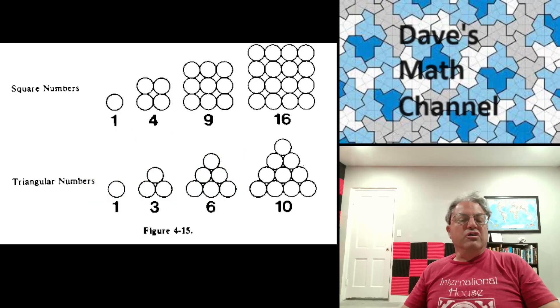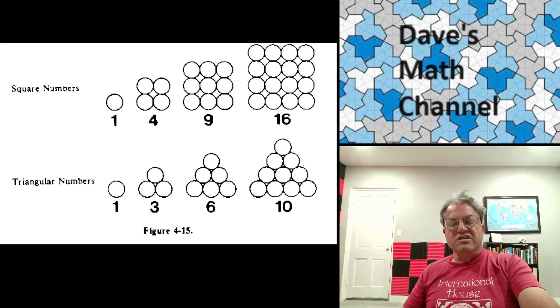We know what square numbers are - they're just numbers you can arrange in a square array: 1, 4, 9, 16. And triangular numbers are similarly numbers you can arrange in a triangular array: 1, 3, 6, 10. That's nice.